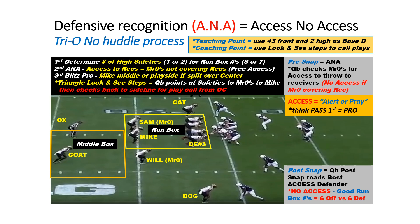We're just going to look and see if they are covering our receivers. If they aren't, then we say we have access to throw, and we know we have bad numbers in the run box. If they're out covering the receivers, now we have no access to throw, but that means we have good numbers — six blocking, six defenders in the run box.